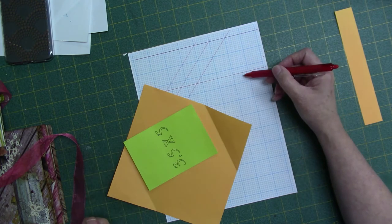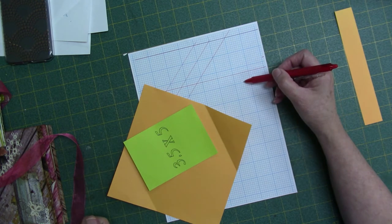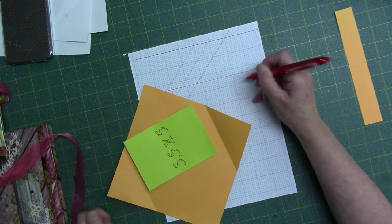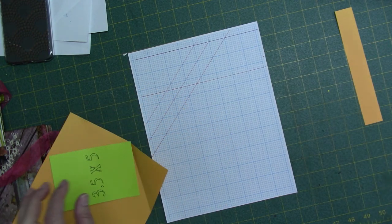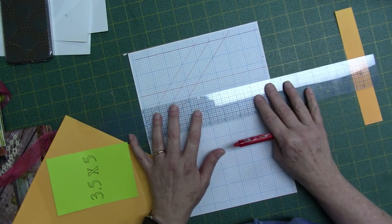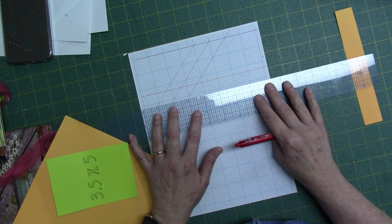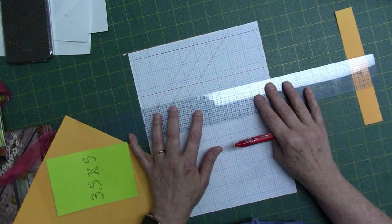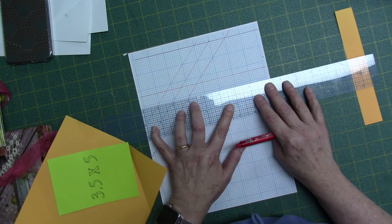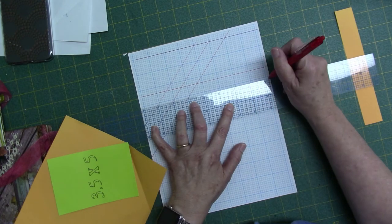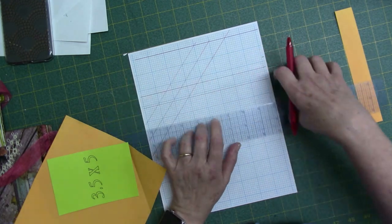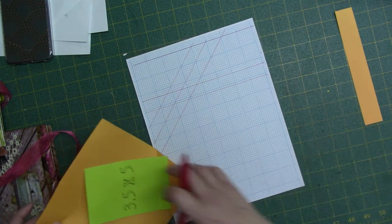And I'm going to count 5 1⁄8 inch down. 1, 2, 3, 4, 5. It's going to be right there. Let me draw this one in also, because I'm going to save this graph paper for this size card, and I'll always have my reference points to use over and over again for this size card.